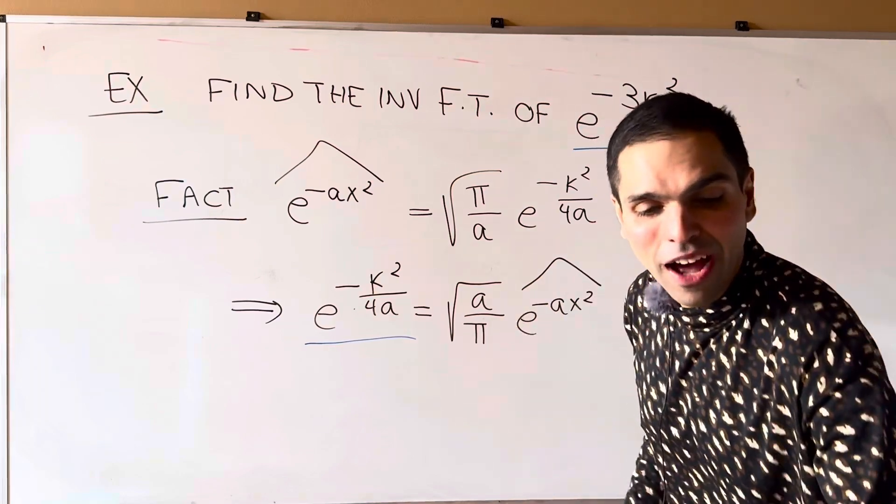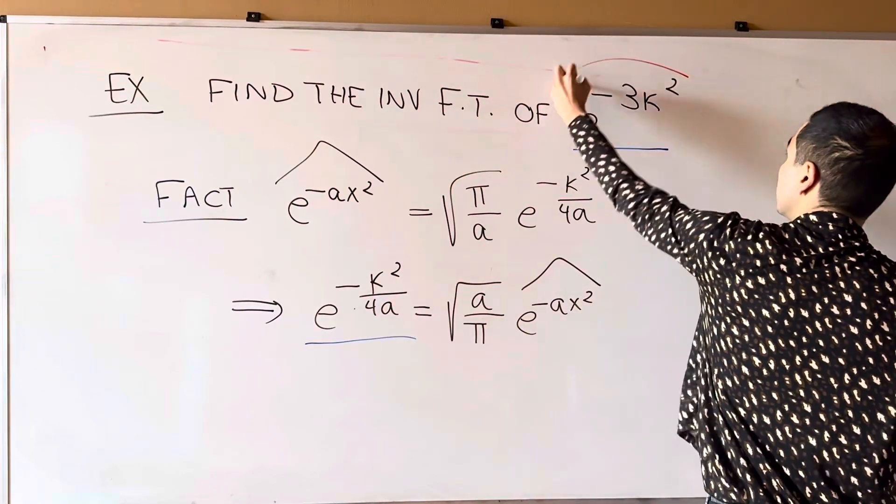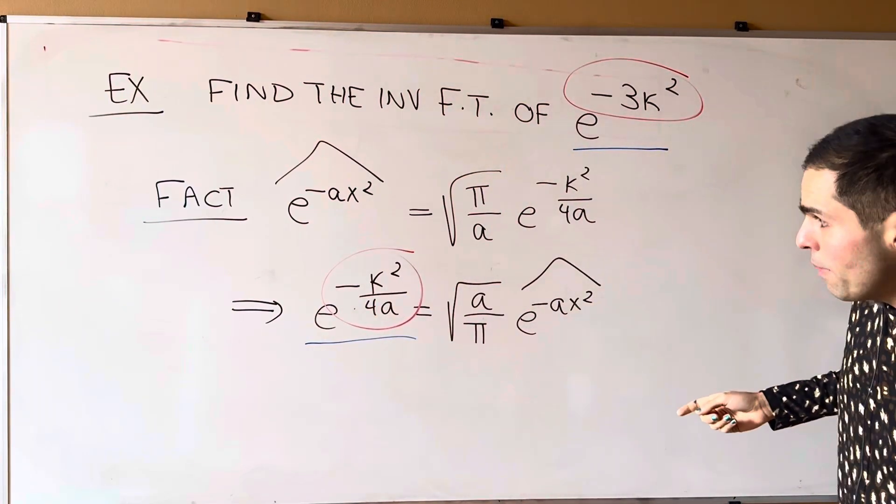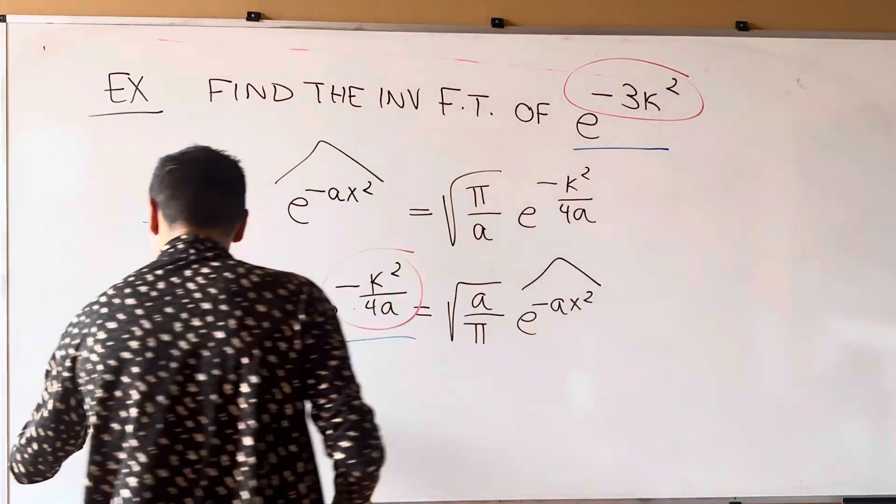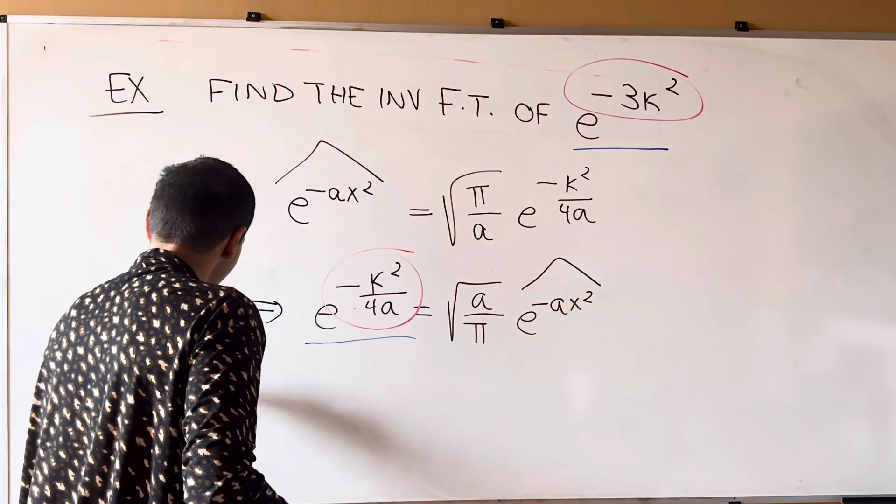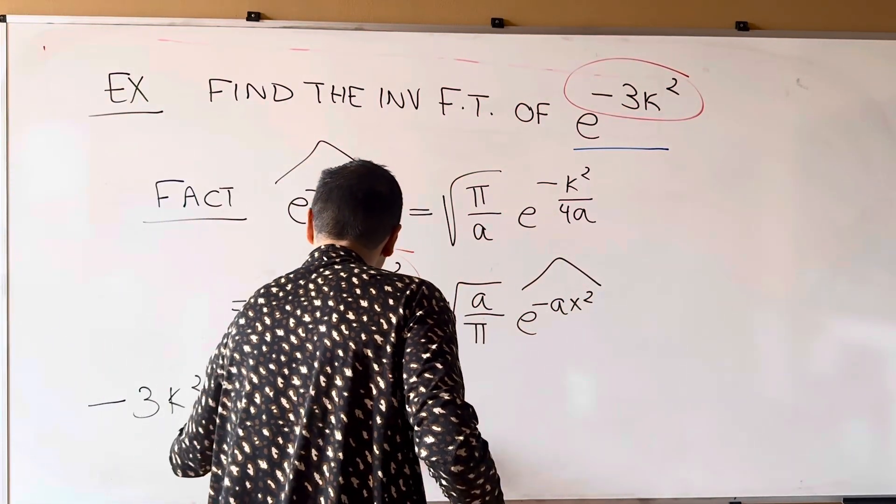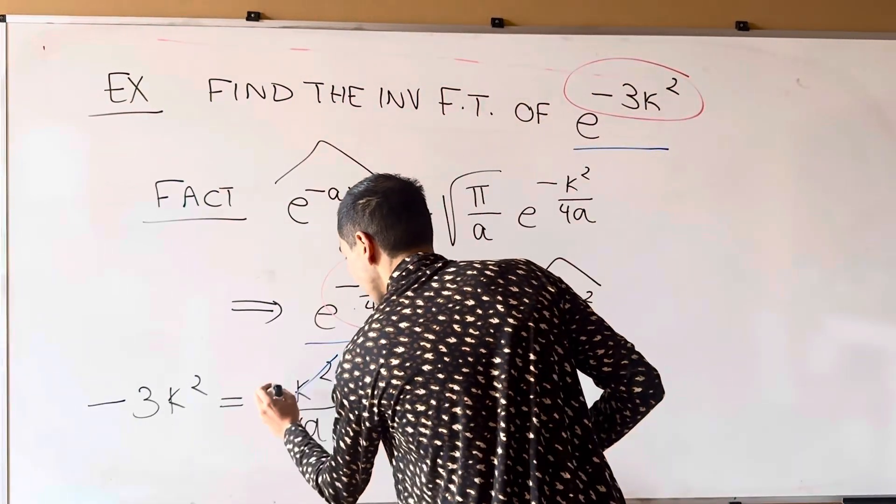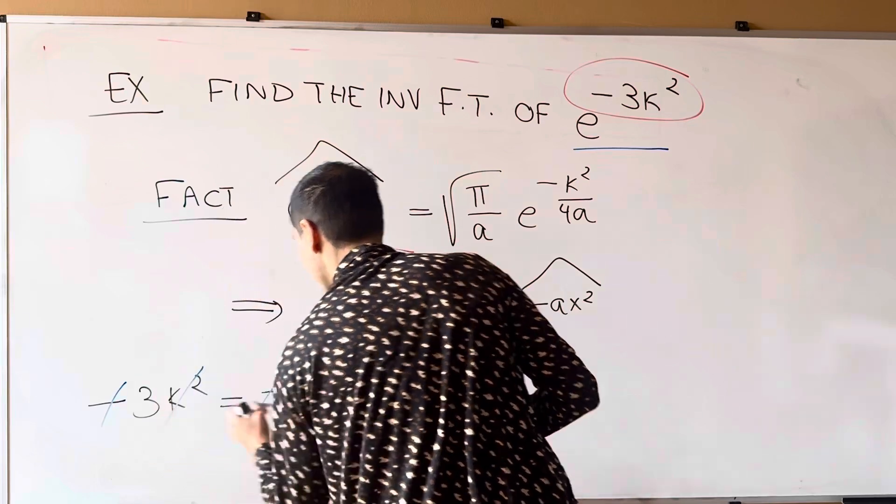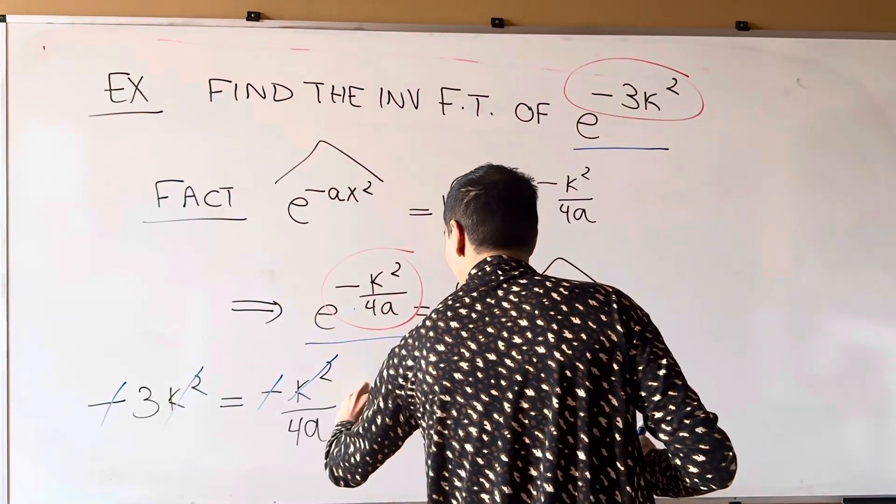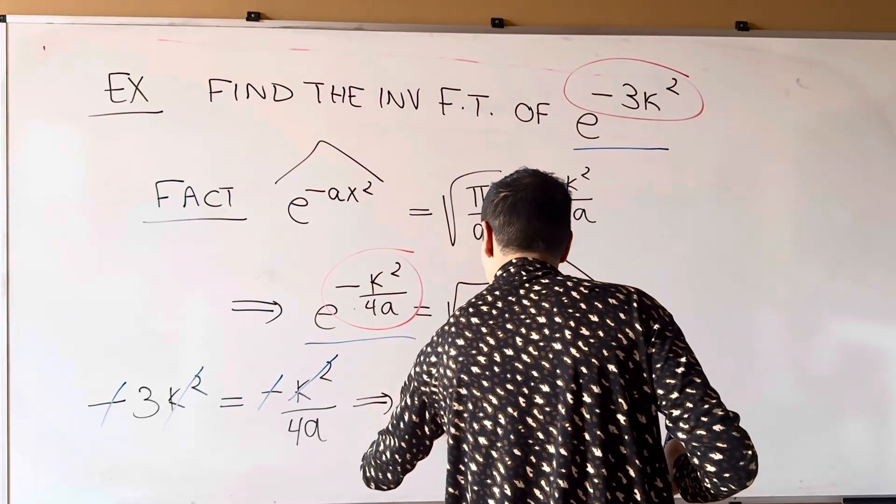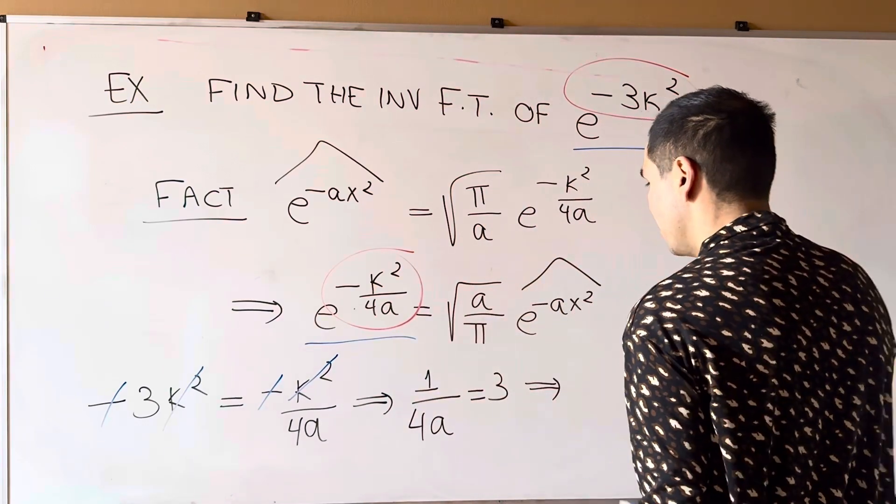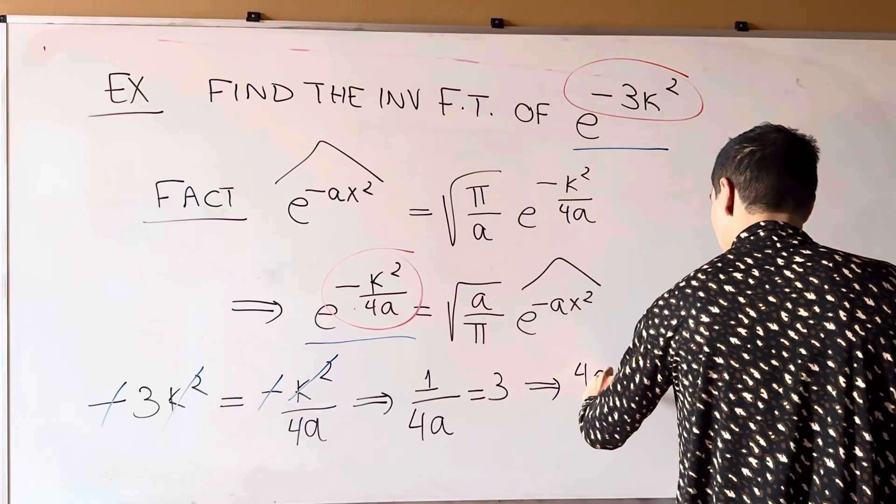So, all you have to do is to compare the exponents. Minus 3 kappa squared is minus kappa squared over 4a. Now, there's some nice simplifications. This cancels out, this cancels out, and then we get 1 over 4a is 3, and then we basically get 4a